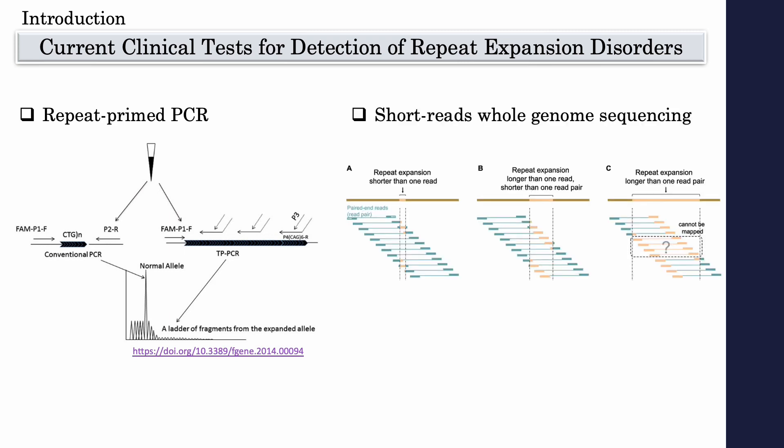Another approach would be to use NGS analysis to detect these expansions, but short-read whole-genome sequencing will be limited to detect expansions that are smaller than the read length, failing to reliably detect long repeat expansions.